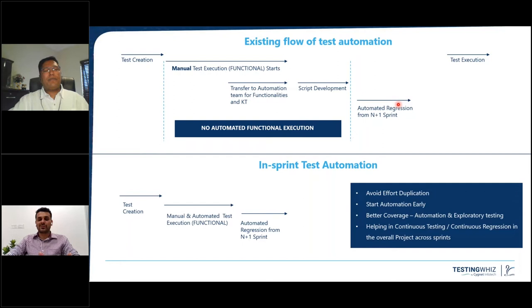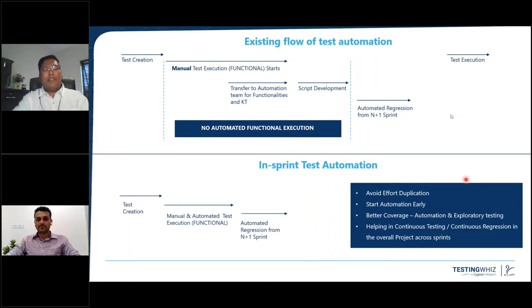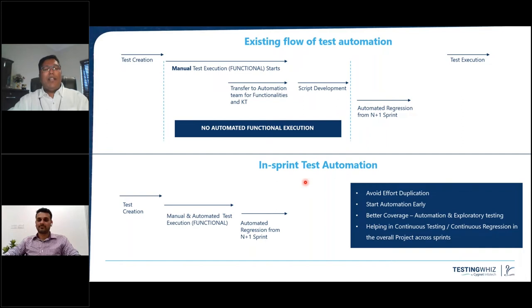This is something we need to solve and focus on going forward. Some people say they have automation as part of the sprint already, but when we say no automated functional execution, it's still either no or limited automation. When we talk about automation, there should be maximum coverage on the automation side.